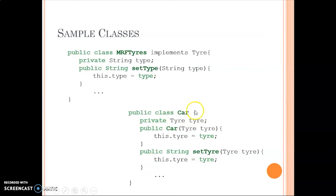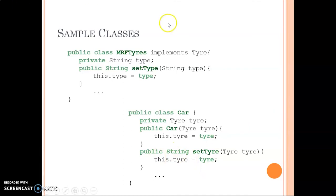This MRF Tires class is used inside the Car class. The Car class has a dependency on the Tire class, and there are two ways we are implementing this dependency — either using a constructor or using a setter. We have defined both here as we will be using this sample code in our future examples, so take a minute to look at it.